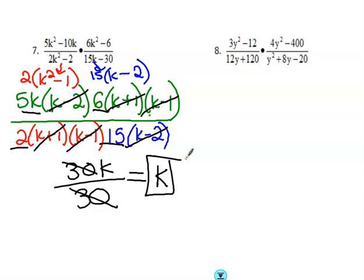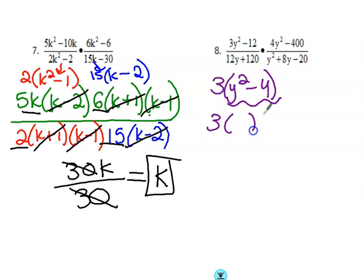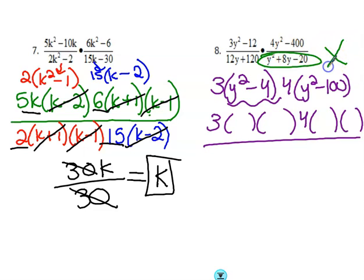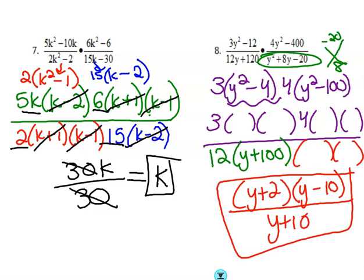I want you to try number 8. First, factor: take a 3 out and you have y² minus 4; take a 4 out of the second one and you have y² minus 100. Then there's a trinomial — figure out what those factors are. Pause the video and come back and see what you get. The final answer is y plus 2 times y minus 10 over y plus 10. Once you've factored it all out and simplified, that is your final answer — you wouldn't have to FOIL it; leave it in factored form.